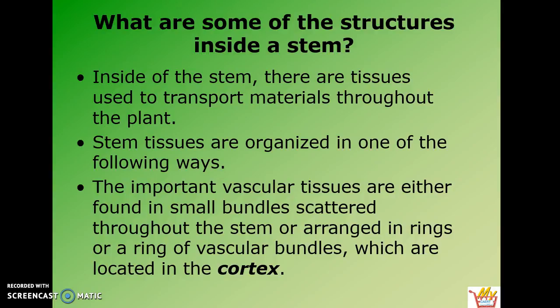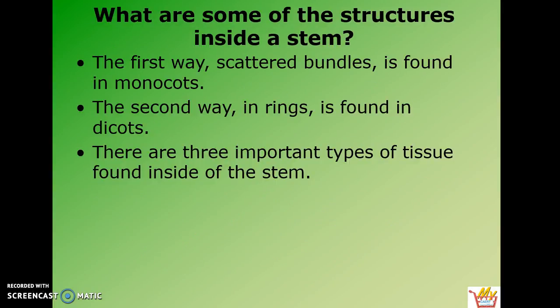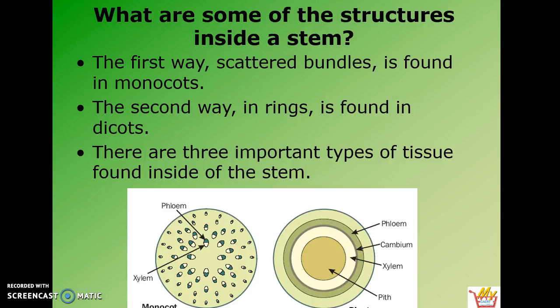The vascular tissues are either found in small bundles scattered throughout the stem or arranged in rings, which are located in the cortex. Do you remember when we discussed monocots and dicots, and the stem was one of the ways you could distinguish between them? When the stems are scattered, as shown in this picture, you have a monocot. Notice that in the dicot, they occur in rings.